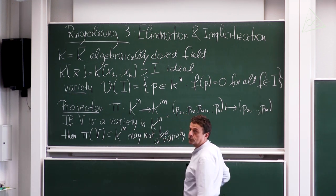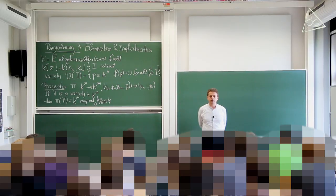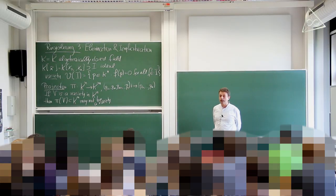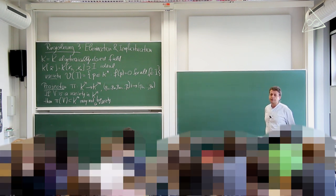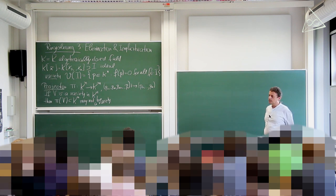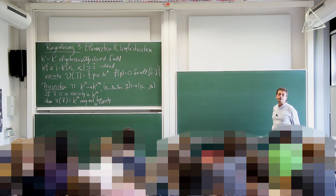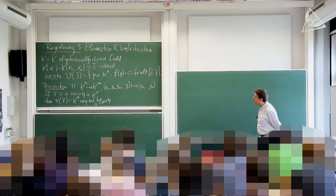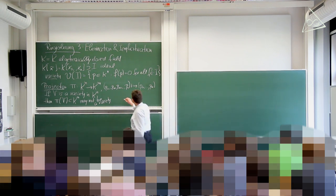A variety is a subset of kⁿ which is the zero set of a collection of polynomials. That collection can be finite or infinite, because by Hilbert's basis theorem, we can always replace an infinite set of polynomials by a finite subset with the same zero set.